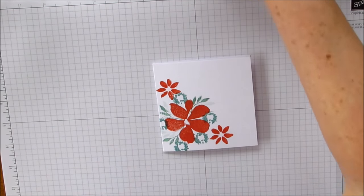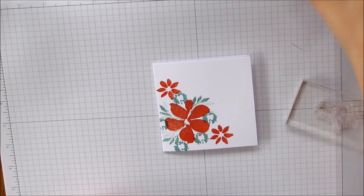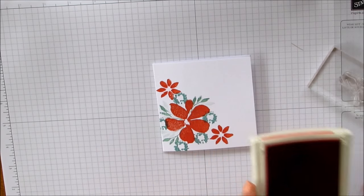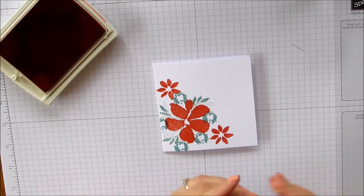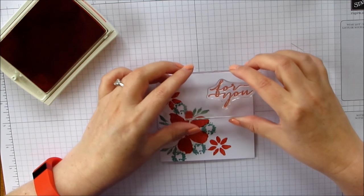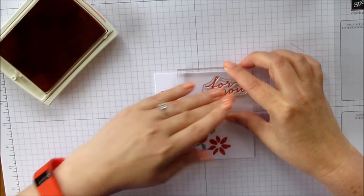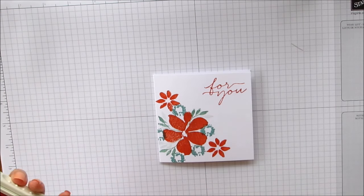And then lastly, we're just going to put our sentiment on. I've chosen the for you one. I'm bringing back in the Calypso Coral. And you can see how quick this is to make if you wanted to get lots done. I think it would be lovely with a little gift bag. I'm just trying to line up as best I can without getting my head in the camera for you. There we go.